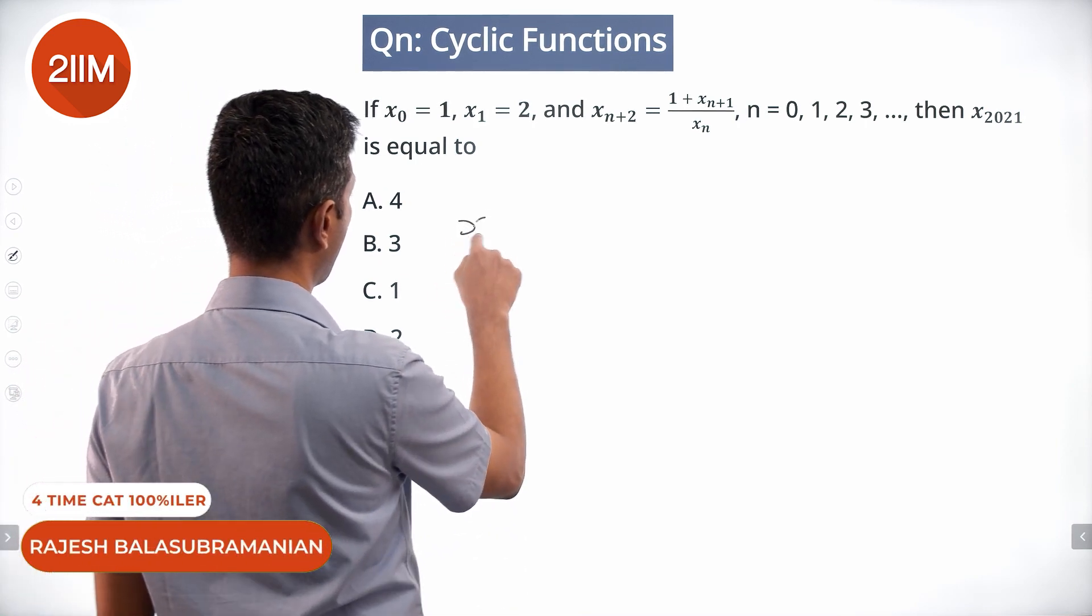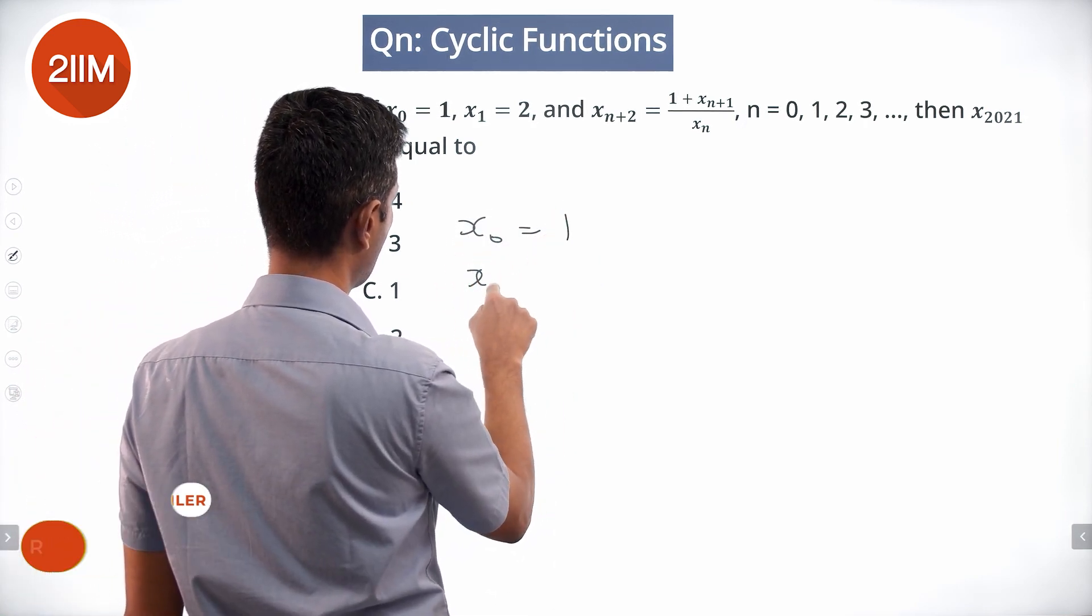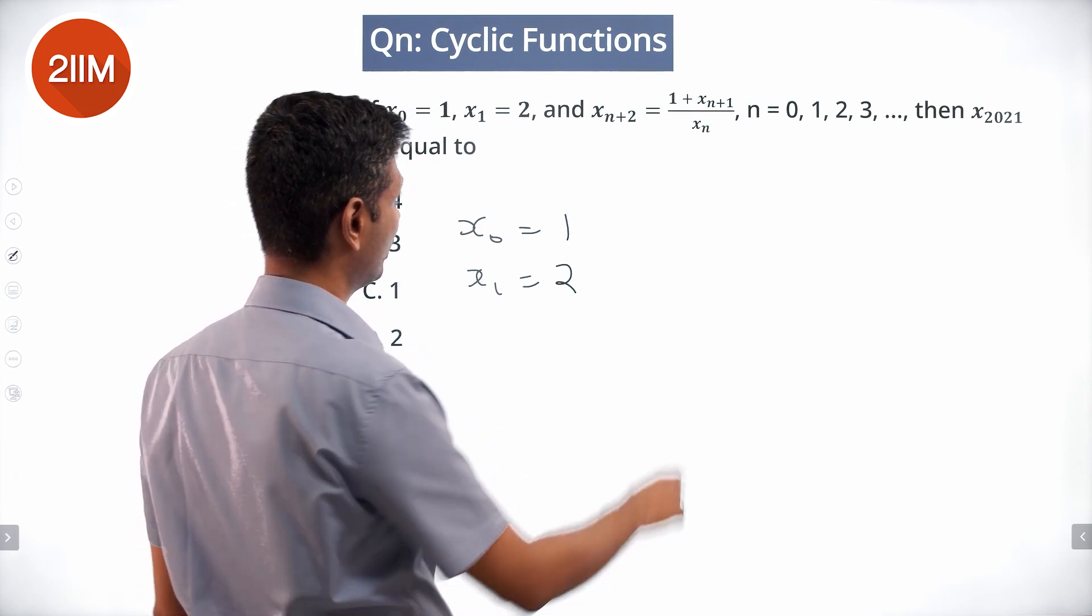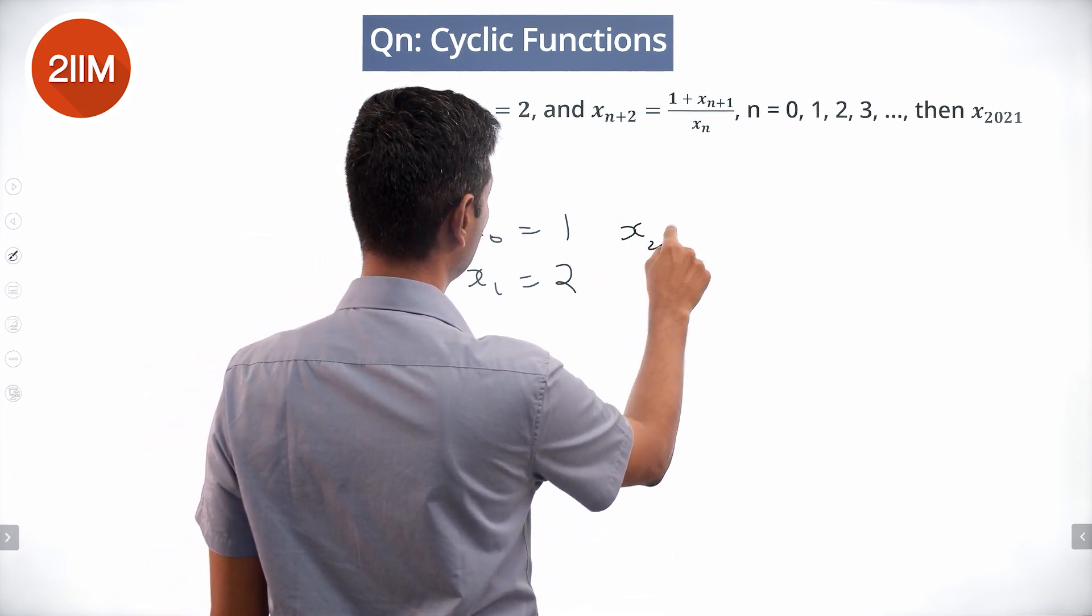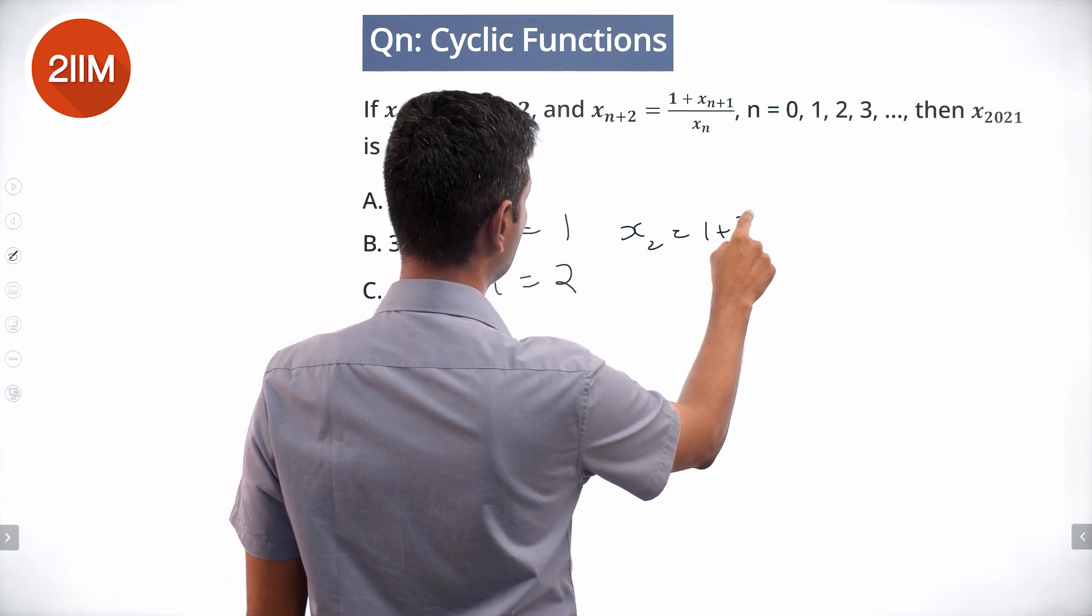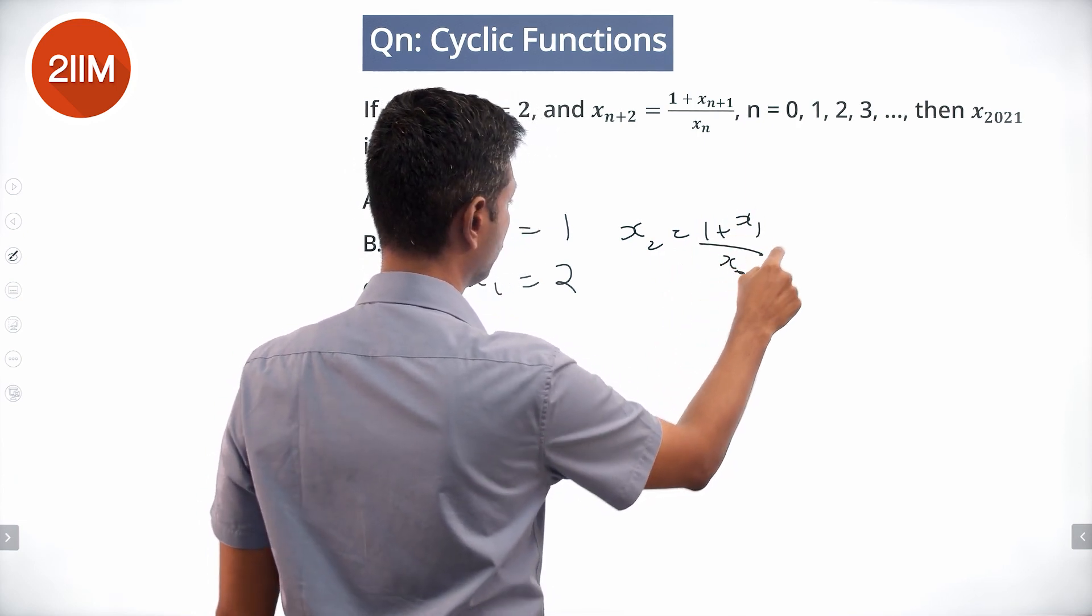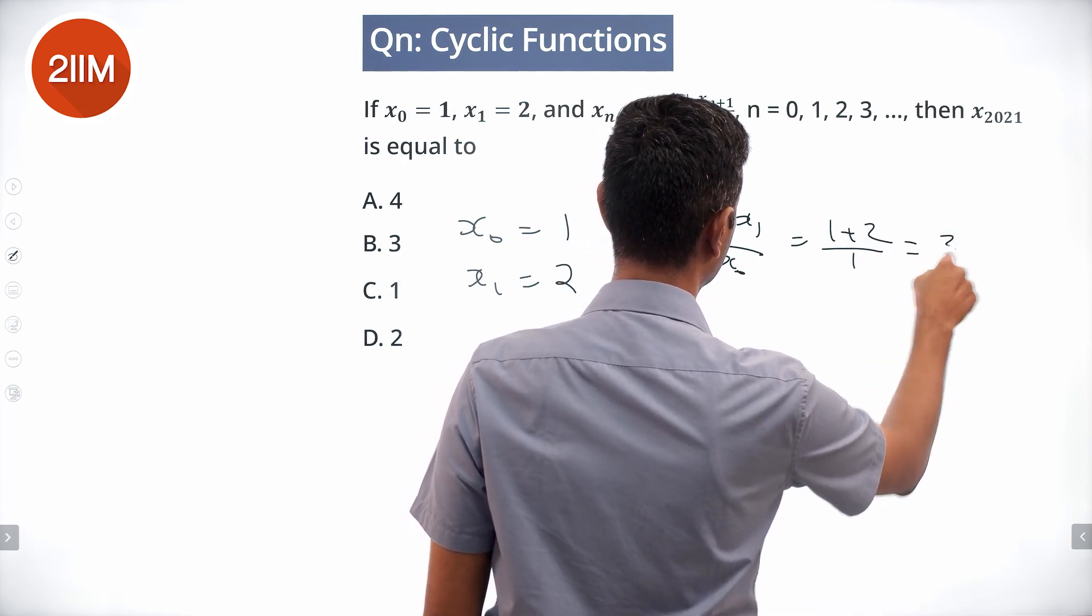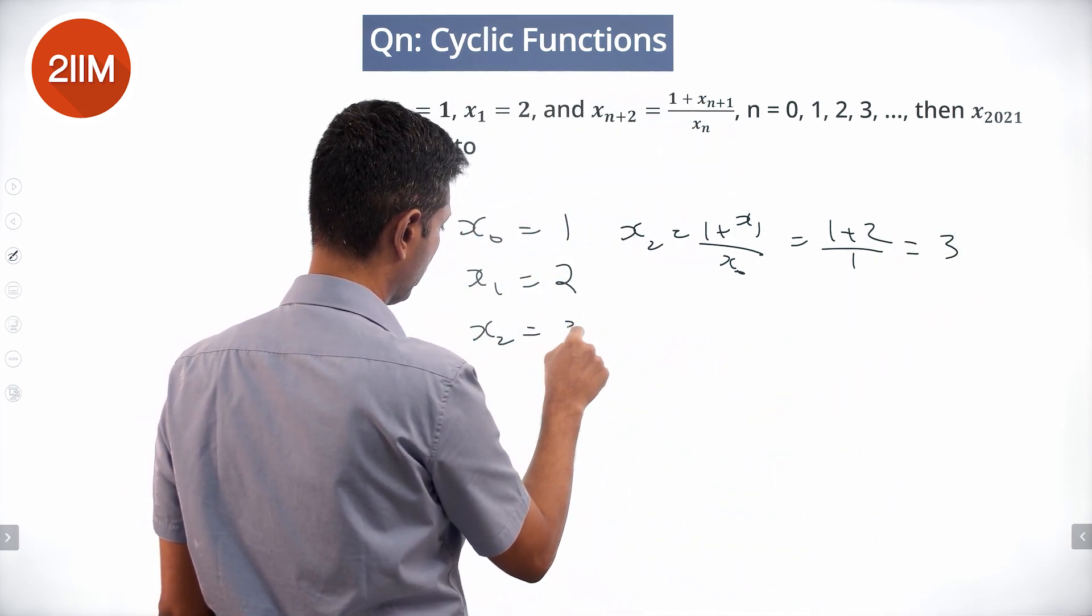x₀ is 1, x₁ is 2, and x_{n+2} is (1 + x_{n+1})/x_n. So x₂ is (1 + x₁)/x₀, which is (1 + 2)/1 equals 3. So x₂ is 3.